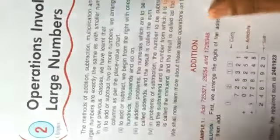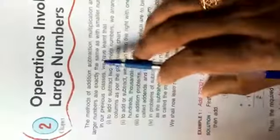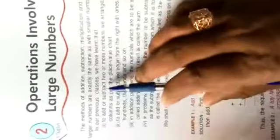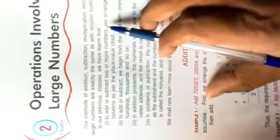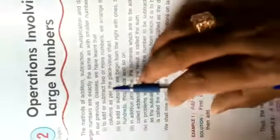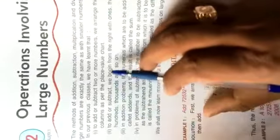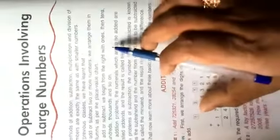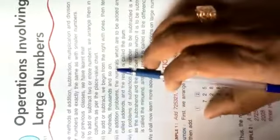The method of addition, subtraction, multiplication, and division of larger numbers are exactly the same as with smaller numbers. In our previous classes, we have learned that first, to add or subtract two or more numbers, we arrange them in columns as per the place value chart. Second, to add or subtract, we begin from the right with ones, tens, hundreds, thousands, and so on.